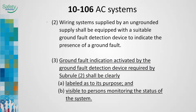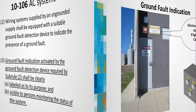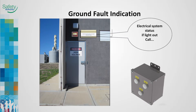Rule 10-106 AC systems. Sub-rule 3 was an Appendix B note in the 2012 Code Edition. The note was moved to Section 10, making compliance a mandatory requirement. Acceptable locations should be determined based on the type of occupancy or use and where those responsible for monitoring the status of the system will normally be situated. It is important that the location of the system's status monitoring equipment be located where the person responsible will receive the notification, and that the responsible person understands the situation and the consequences of ignoring the warning signal.